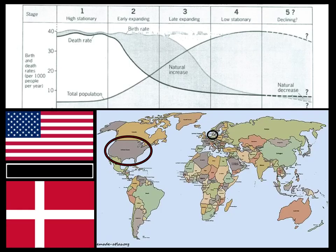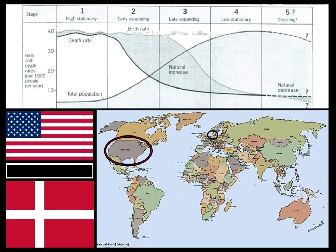Stage four of the demographic transition model sees a low death rate due to high standards of medical care — these are developed countries like Denmark and the United States. Development has allowed excellent quality sanitation, healthier lifestyles, and emphasis on exercise. The birth rate becomes very low because of the high cost of bringing up children, people choosing careers over having children, and excellent access to birth control and education. Consequently, the rate of natural increase is very low or essentially stable.